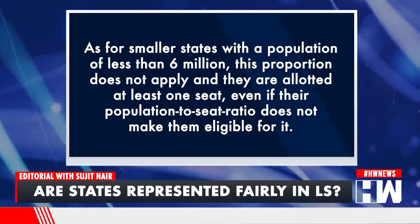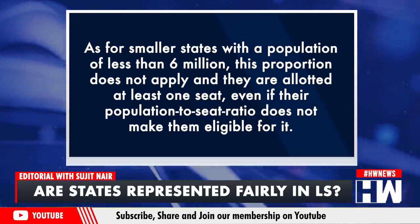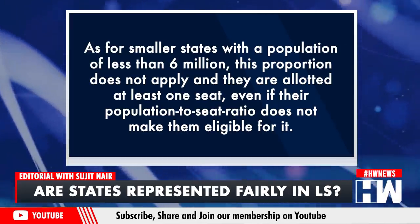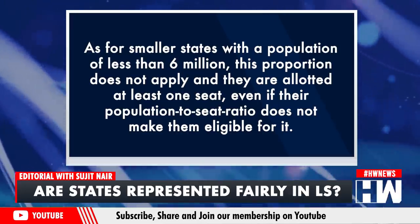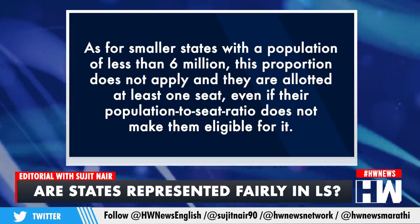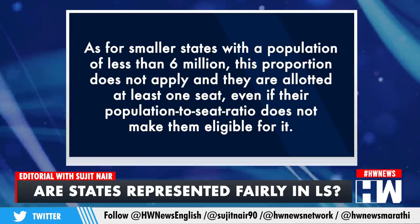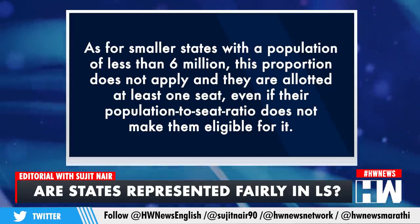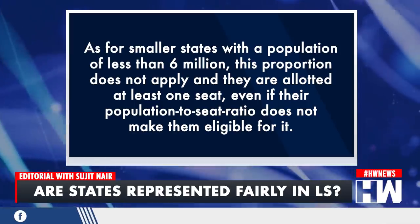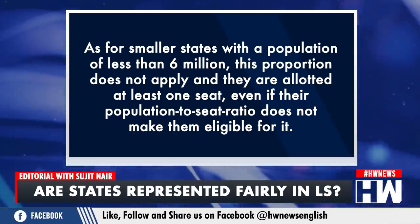One more thing Article 81 adds is that for smaller states with a population of less than 6 million, this proportion does not apply, and they are allotted at least one seat even if the population-to-seat ratio does not make them eligible for it. So for states with less than 6 million people, this ratio proportion changes and they minimum get at least one seat.